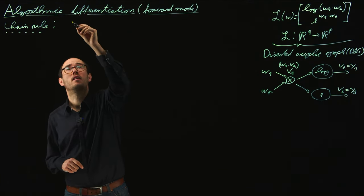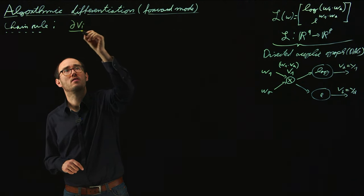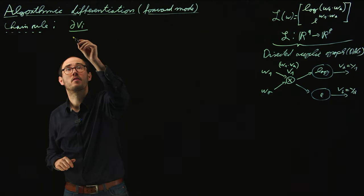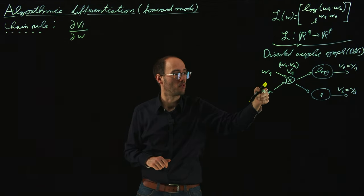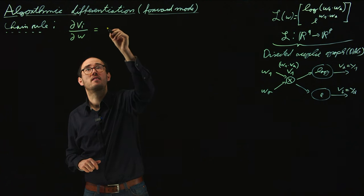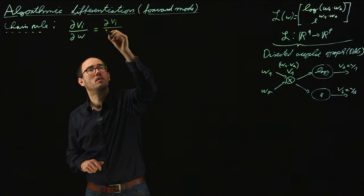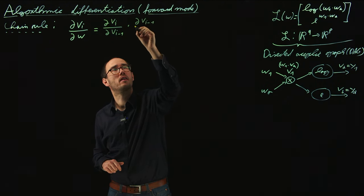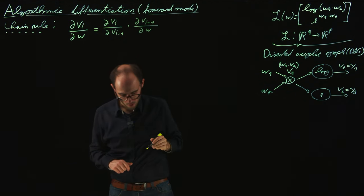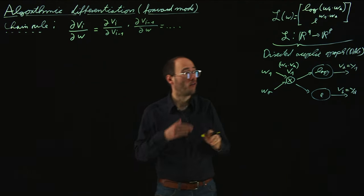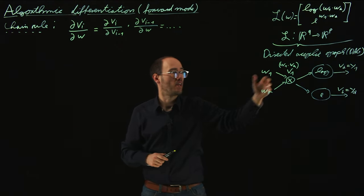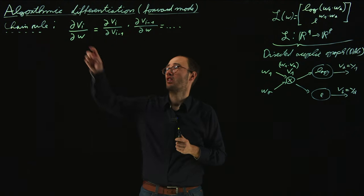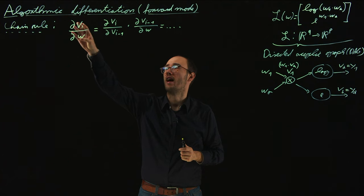In the forward mode, we apply the chain rule in the forward direction — going from left to right. So the partial derivative of V_i with respect to any parameter W can be rewritten as the partial derivative of V_i with respect to V_{i-1} times the partial derivative of V_{i-1} with respect to W. We can extend this scheme forward through the DAG and derive a rule to calculate partial derivatives at each substage until we reach the final output.